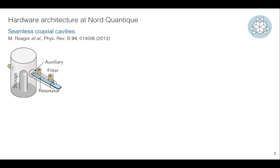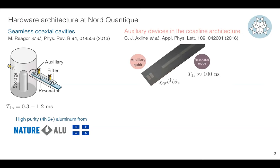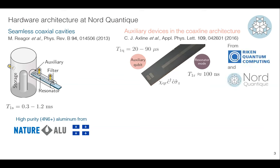Our hardware architecture is the standard circuit QED architecture using three-dimensional microwave cavities. The GKP state will live in this cavity. One thing which is quite nice is that we have our local provider of high purity aluminum in Quebec. With this, we can control not only the purity of the aluminum but also which impurities we want. Without too much work, we can get about one millisecond of lifetime, except when the cavity ages a bit badly and it can go down to about 0.3 milliseconds.